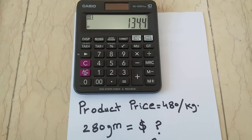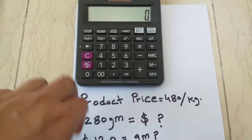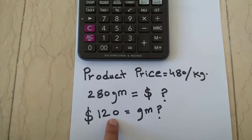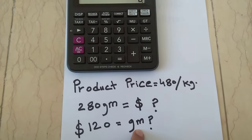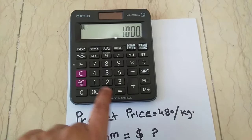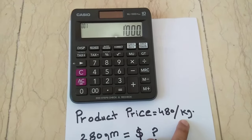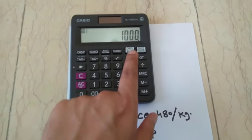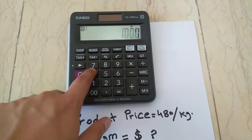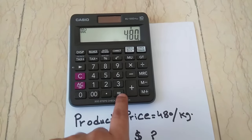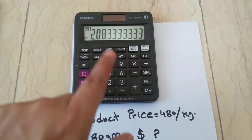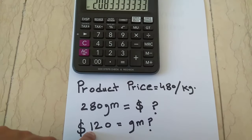Now the second calculation: for example, you want to spend 120 dollars and you want to know how many grams you will get. On your calculator, type 1000 — because 1 kg equals 1000 grams — and then divide by 480. That equals 2.08.